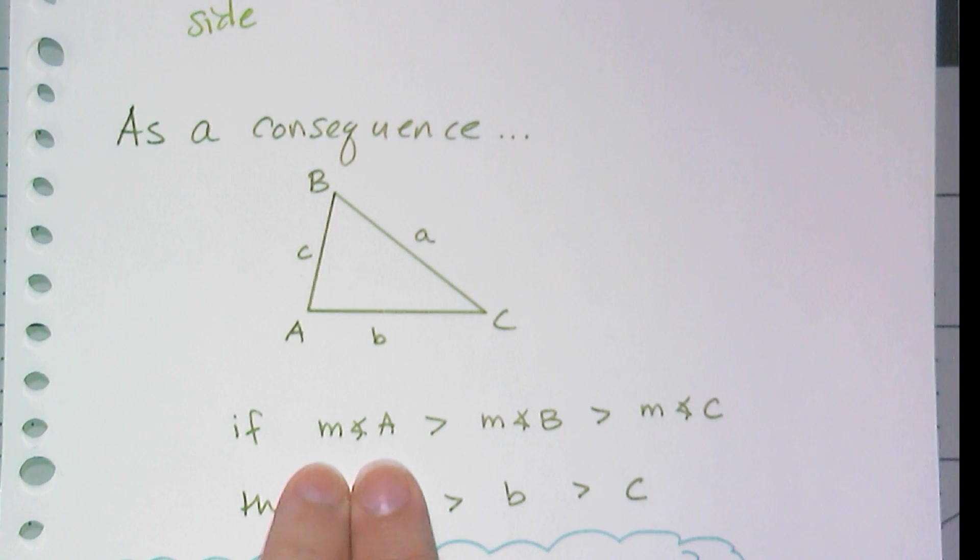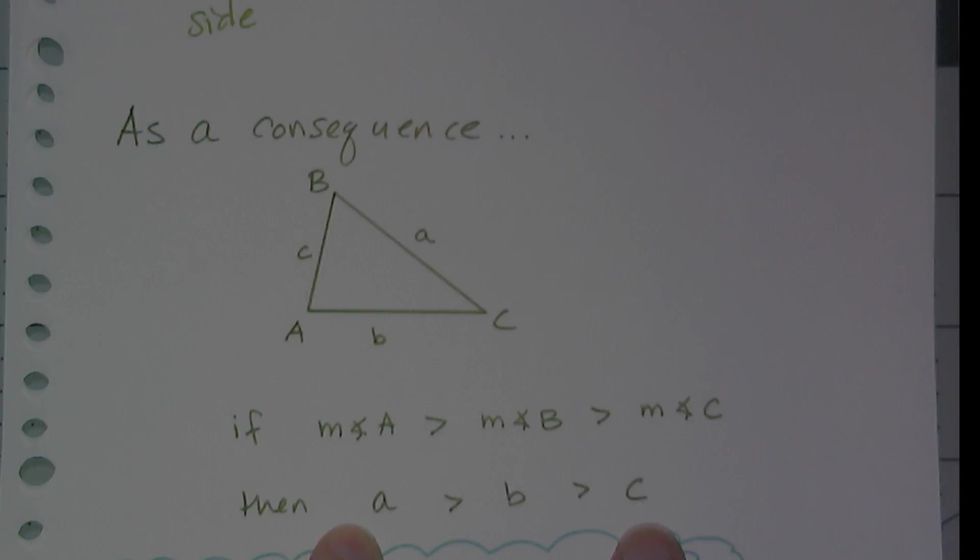And so if I know the measure of angle A is greater than the measure of angle B, which is greater than the measure of angle C, then I know that side A is going to be greater than B, which is going to be greater than C.